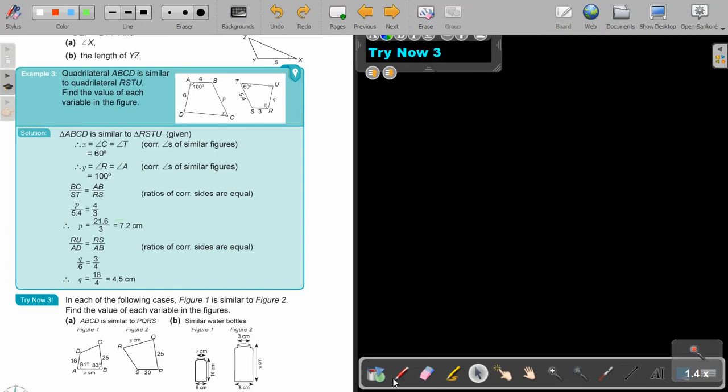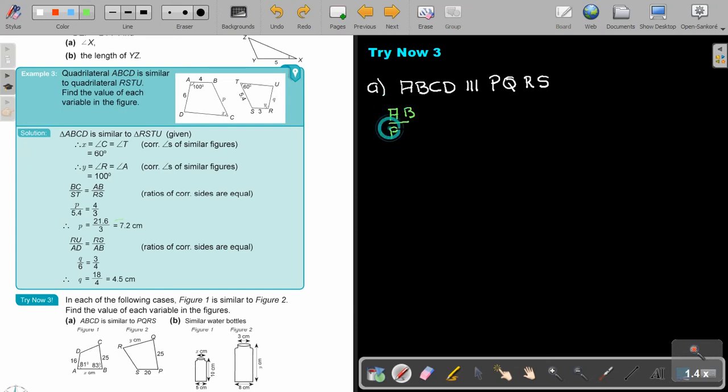In each of the following cases, figure one is similar to figure two. Find the value of each variable in the figures. ABCD is similar to PQRS, so this is always very important that we first write down that. So if I'm looking at this, it's just sides. So this is going to be AB over PQ is equal to BC over QR is equal to CD over RS is equal to AD over PS.